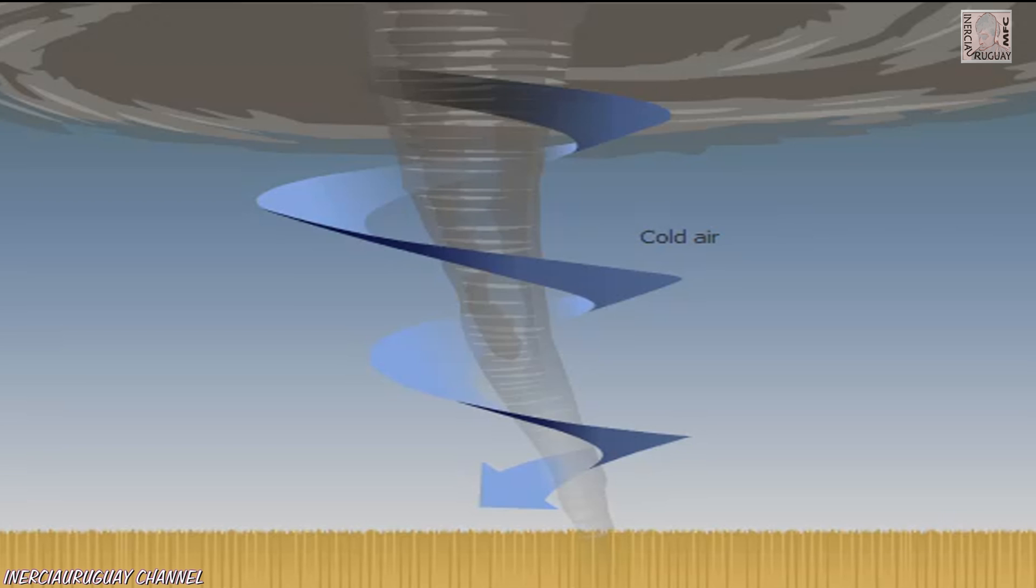Tornadoes die when the cold downdraft wraps around it, weakening and eliminating the updraft.